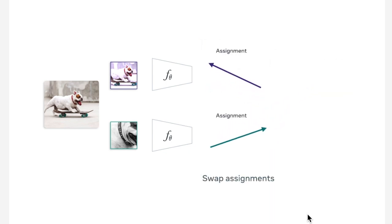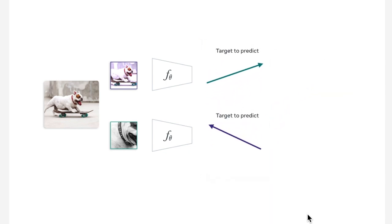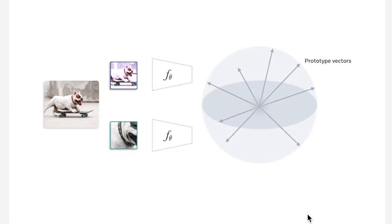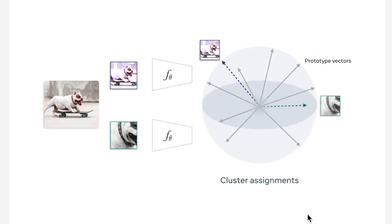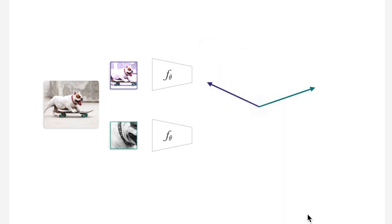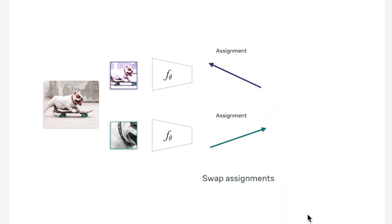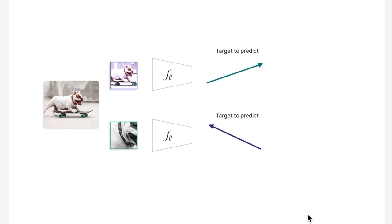There are auxiliary tasks like rotating images and predicting how much they've been rotated, or colorizing a grayscale image. Then there are generative techniques where a GAN's generator generates data, the discriminator classifies it, and you might also learn a vector representation of that data, which is then repurposed for something like ImageNet classification.